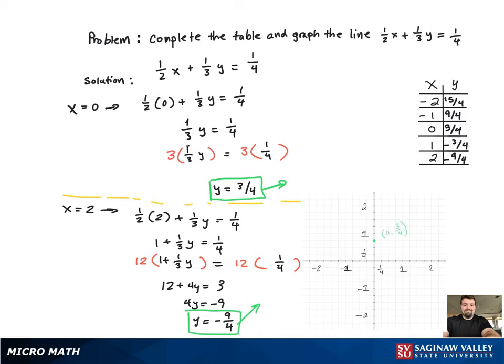We're going to pick 0 and 3/4. That's one of the ordered pairs in the table. And then we're going to pick 1 and negative 3/4, because that's another point in the table. And that's all you need to graph the line, is 2 points.